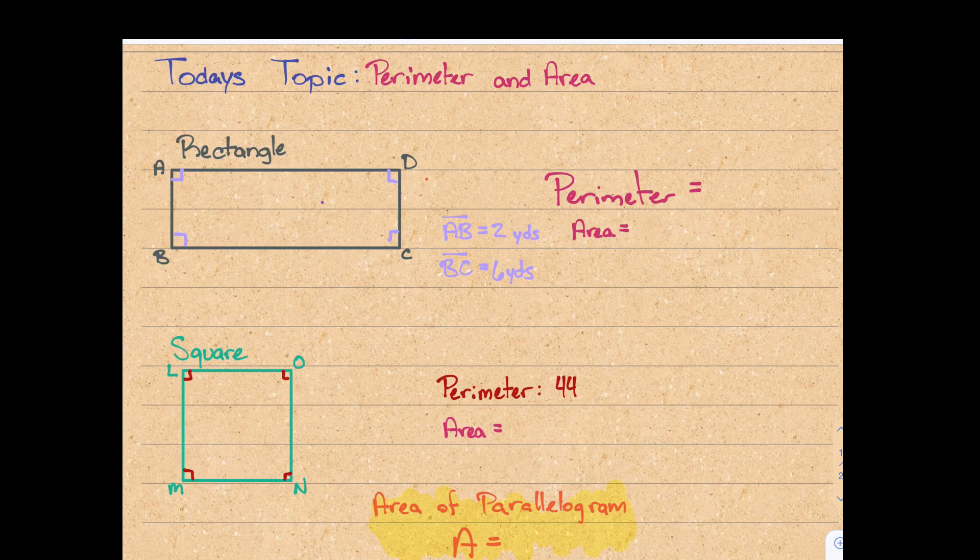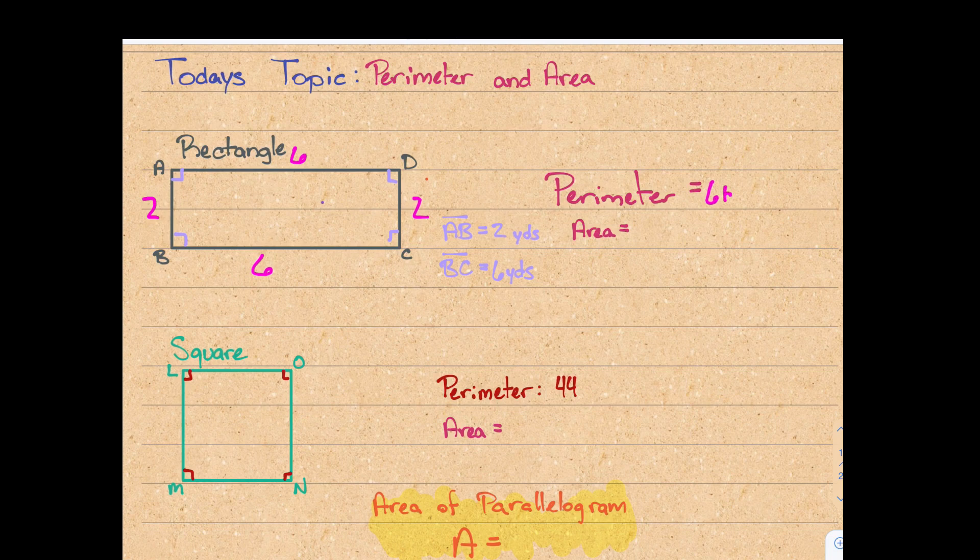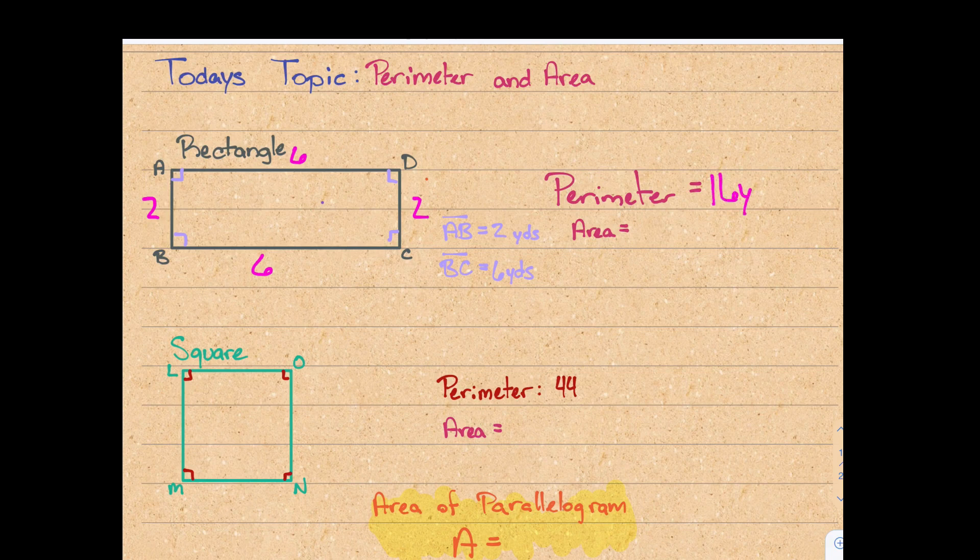So first we'll look at a rectangle. If we remember back from our properties of quadrilaterals, this rectangle has a side AB that's 2 and a side BC that's 6 yards long, which means that AD is also 6 yards long and DC is also 2 yards long. So then to find our perimeter, it's as simple as taking 6 plus 6 plus 2 plus 2, which is 16 yards. It's important to include the unit when you've been given the unit in the problem.